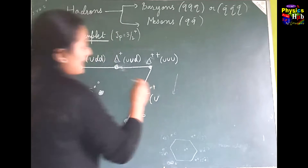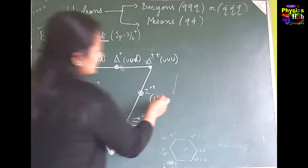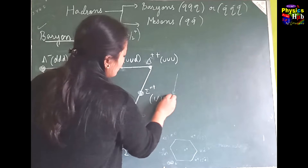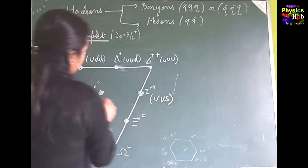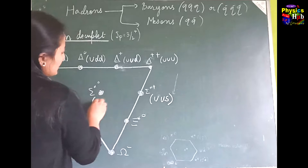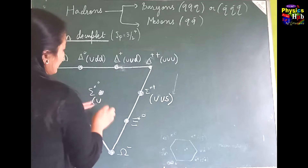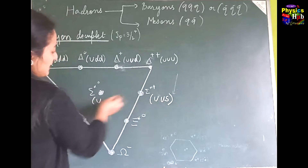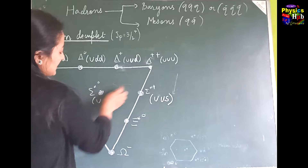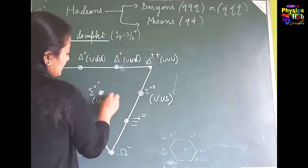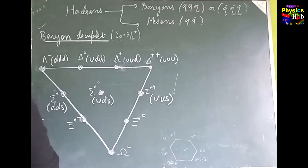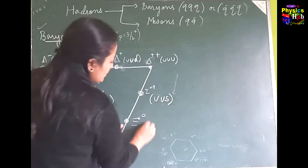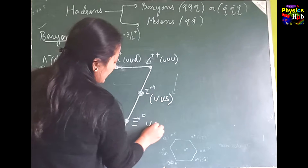Moving down one layer, the number of strange quarks increases by one. So you get uus, then moving left toward more d you get uds, and then dds.